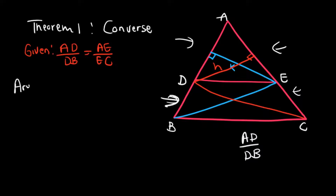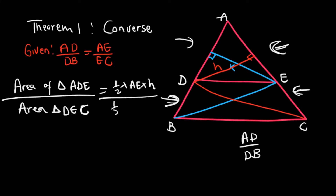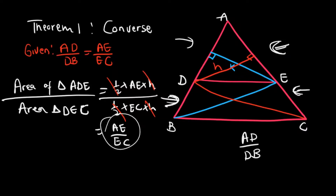Now doing the same on the other side, focusing on the red line: area of triangle ADE over area of triangle DEC equals one-half times AE times H, divided by one-half times EC times H. These cancel, leaving AE over EC.